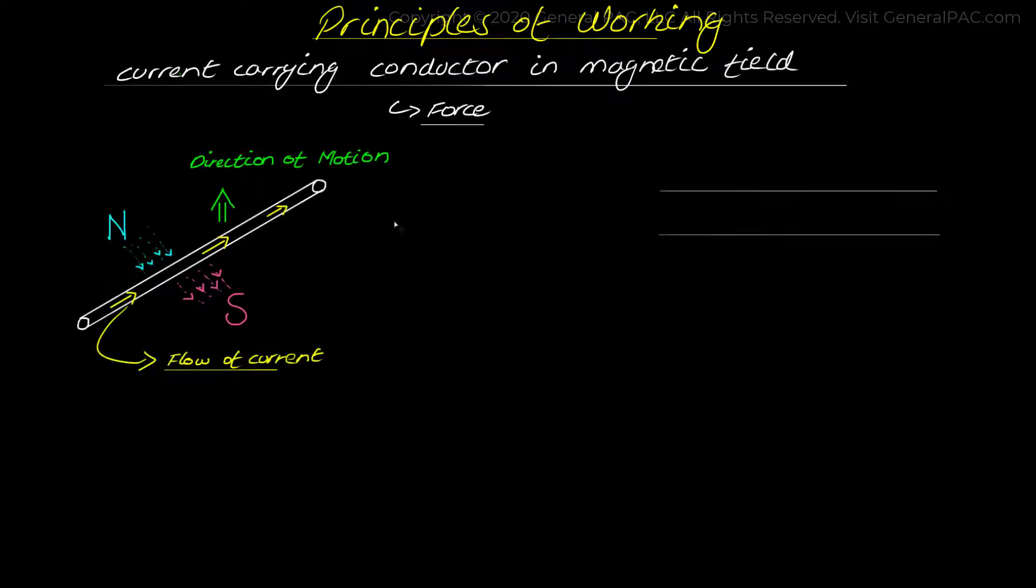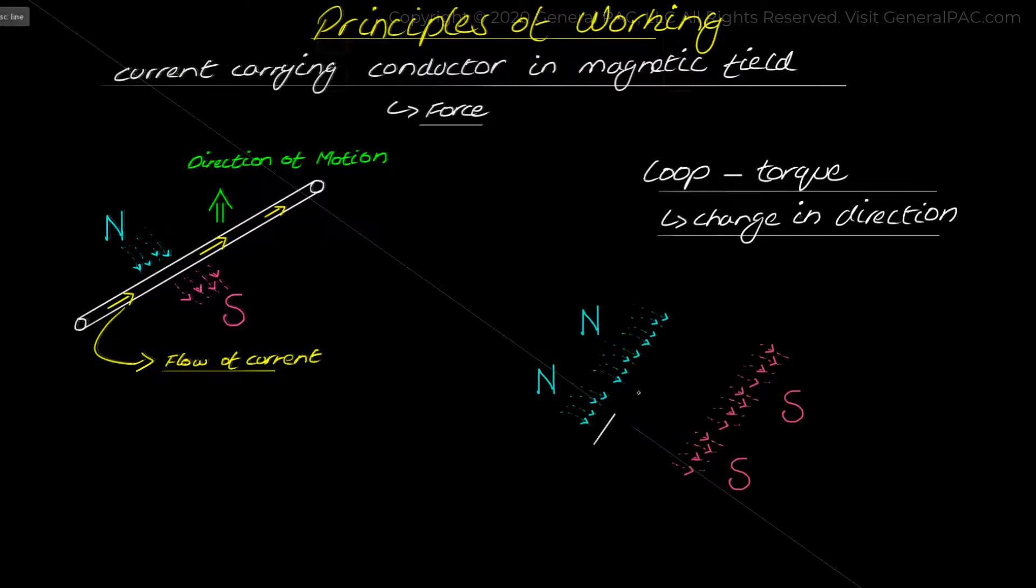If this conductor is arranged to form a loop, a torque is developed due to the change in the direction of current. The torque will then move the coil in a circular path, creating the motor effect.